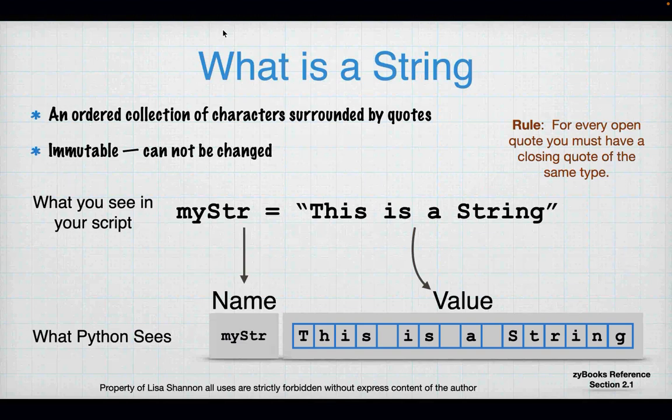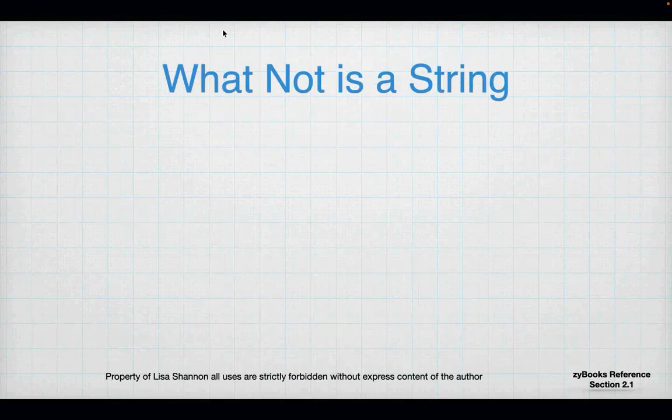For every opening quote, there has to be a closing quote of the same type. I say this a lot because this is one of those easy mistakes, especially when you're new to programming. So you have to remember to balance your quotes.